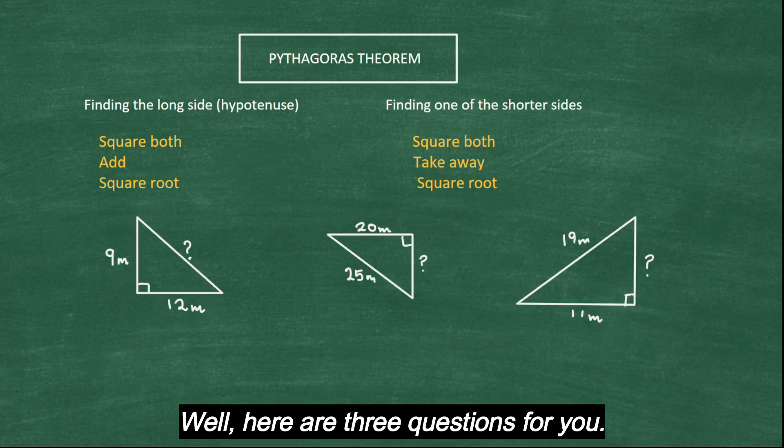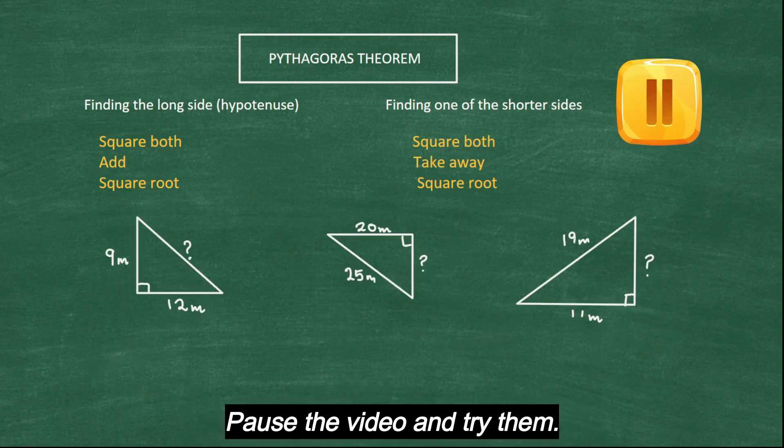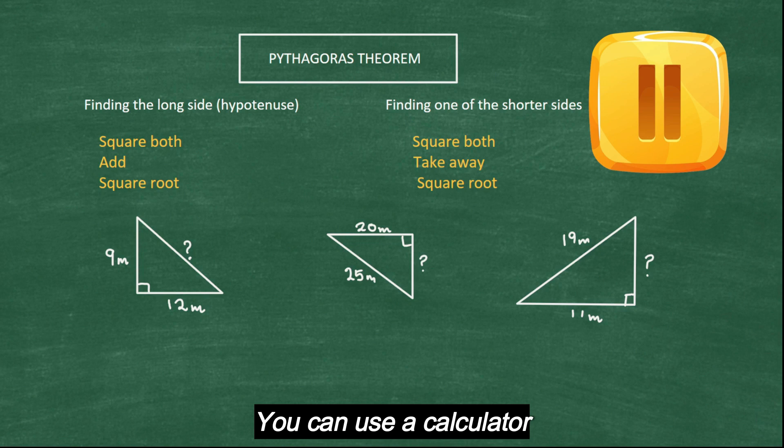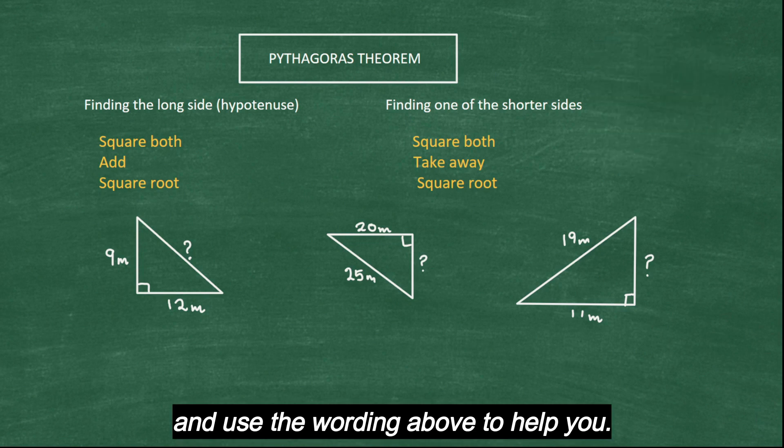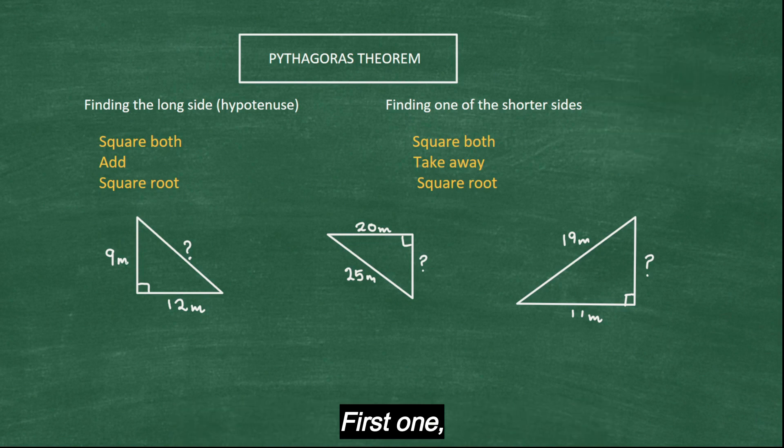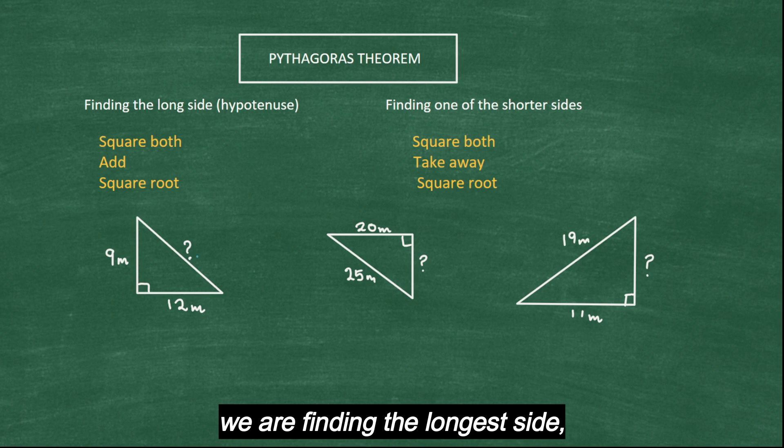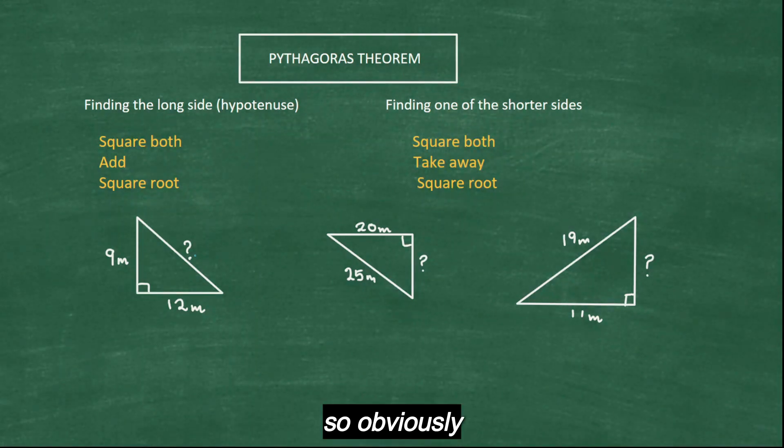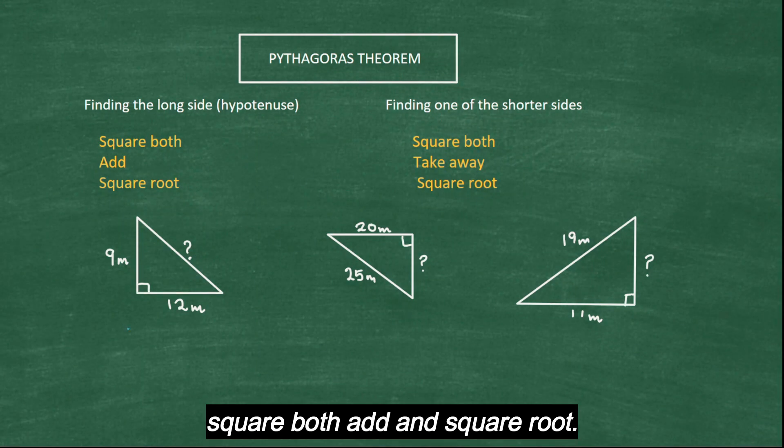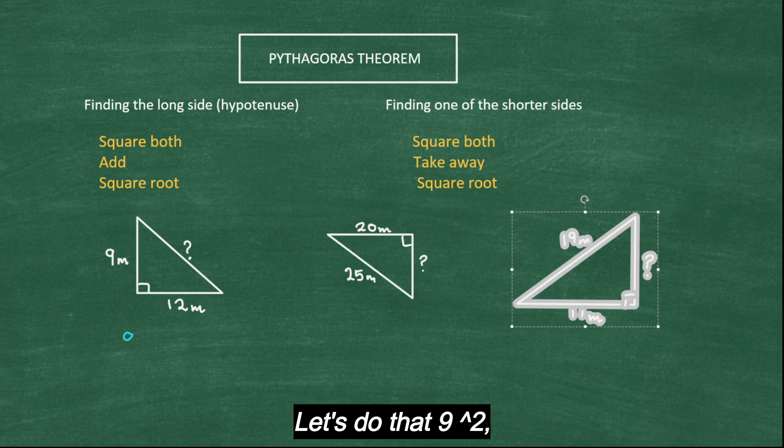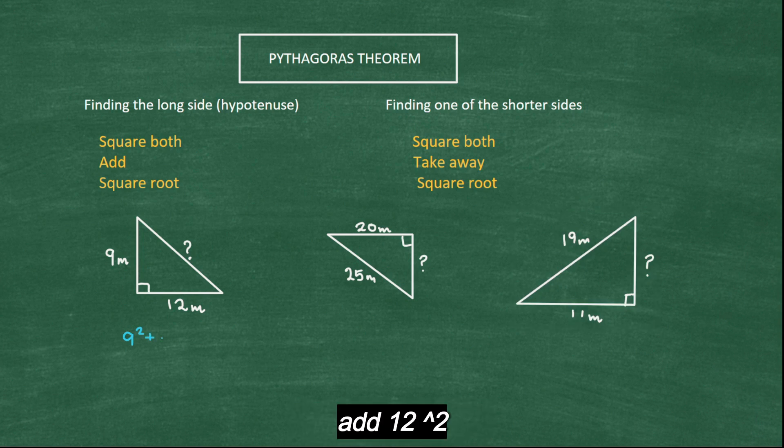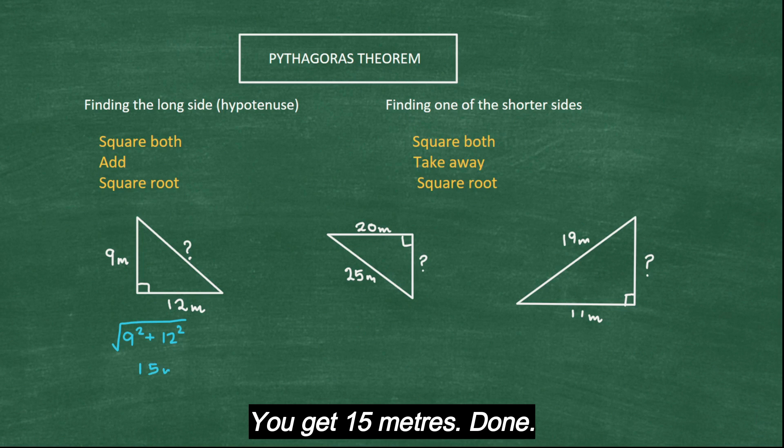Well, here are three questions for you. Pause the video and try them. You can use a calculator and use the wording above to help you. Let's check the answers. First one, we are finding the longest side. So obviously square both, add and square root. Let's do that. 9², add 12² and then root. You get 15 meters. Done.